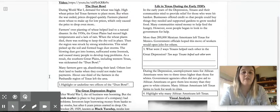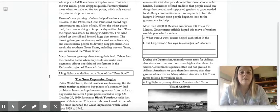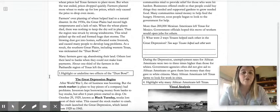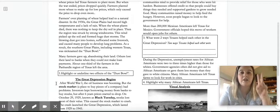So many farmers gave up, abandoning their land. Others lost their land to the banks when they could not afford to make loan payments. About one-third of the farmers in the panhandle region of Texas left the area. So a lot of people are going to start moving west, migrating towards California, hoping that there's better stuff over there. They weren't having those horrible dust storms there. So your first thing you need to do is highlight or underline two effects of the Dust Bowl. So look up in these first three paragraphs and I want you to highlight two things, two effects of the Dust Bowl.